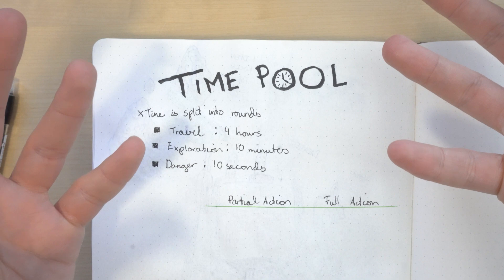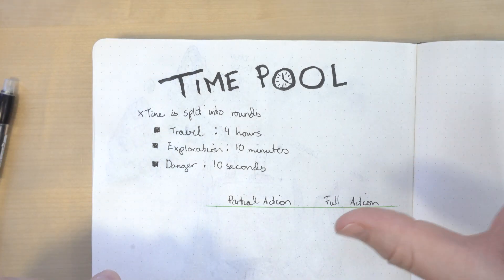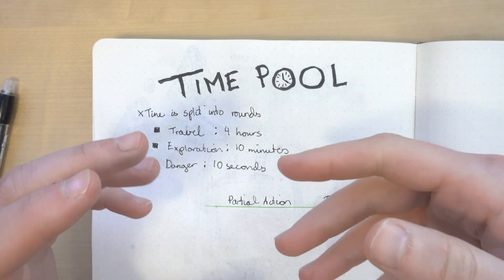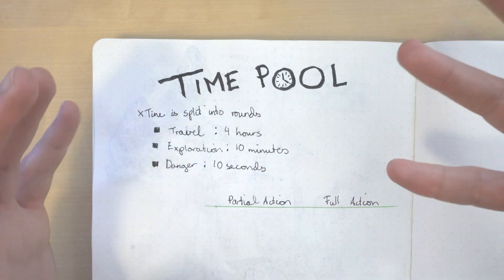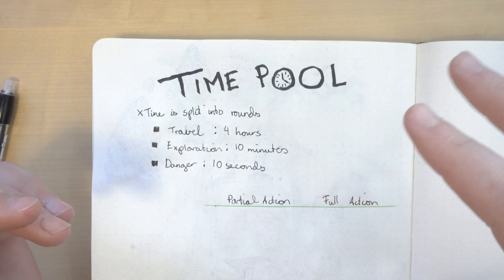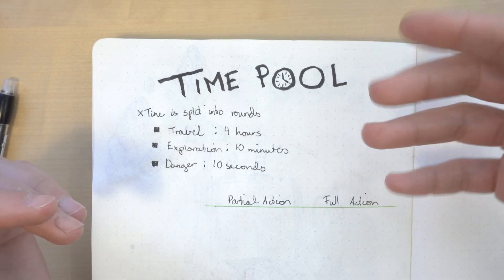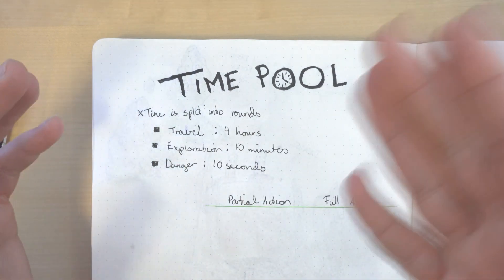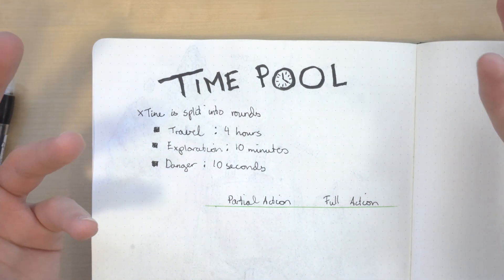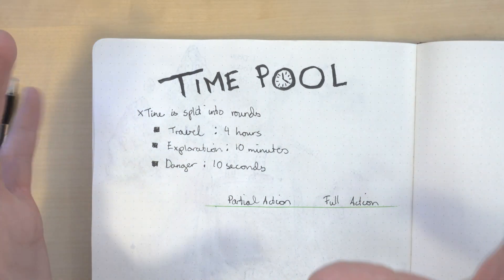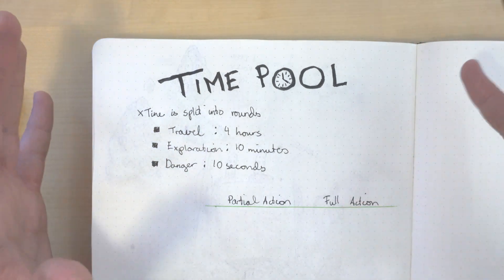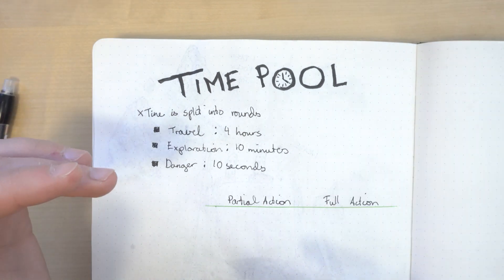This is a mechanic I've used several times in my game, and in my mind it works, but I'm putting it out there for other people to try. This is my time pool mechanic. Well, it's actually not mine, it's mostly stolen from the time pool mechanic from the Angry GM, and I bet he stole it from someone else too. I'll leave a link to his blog post in the description.